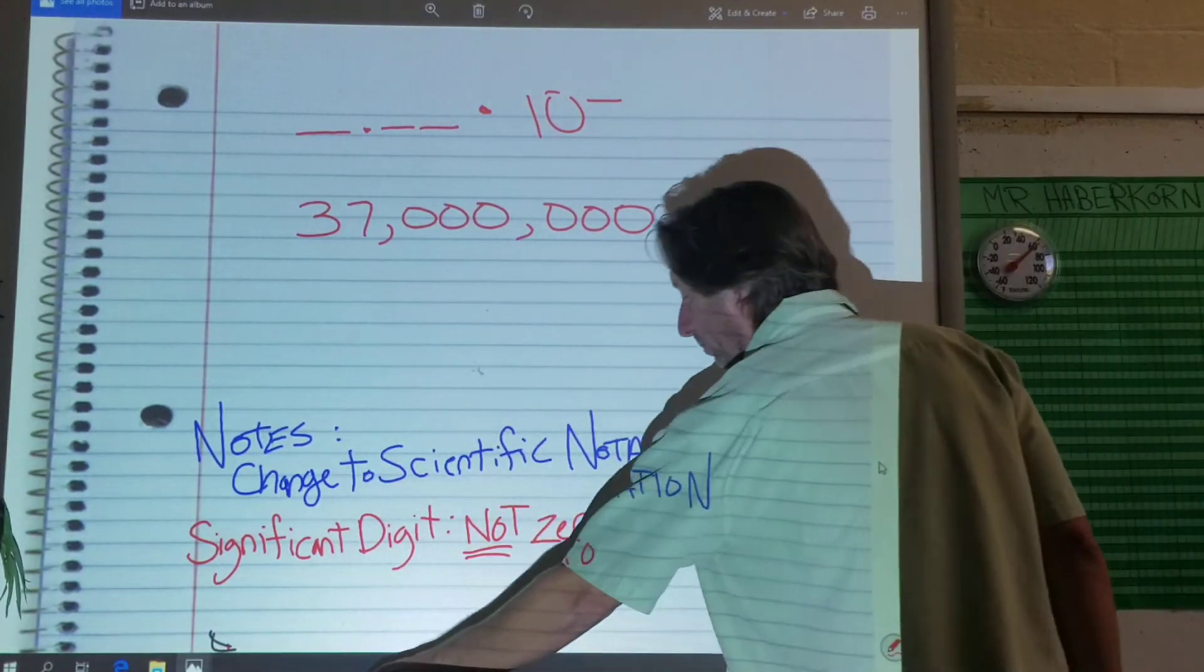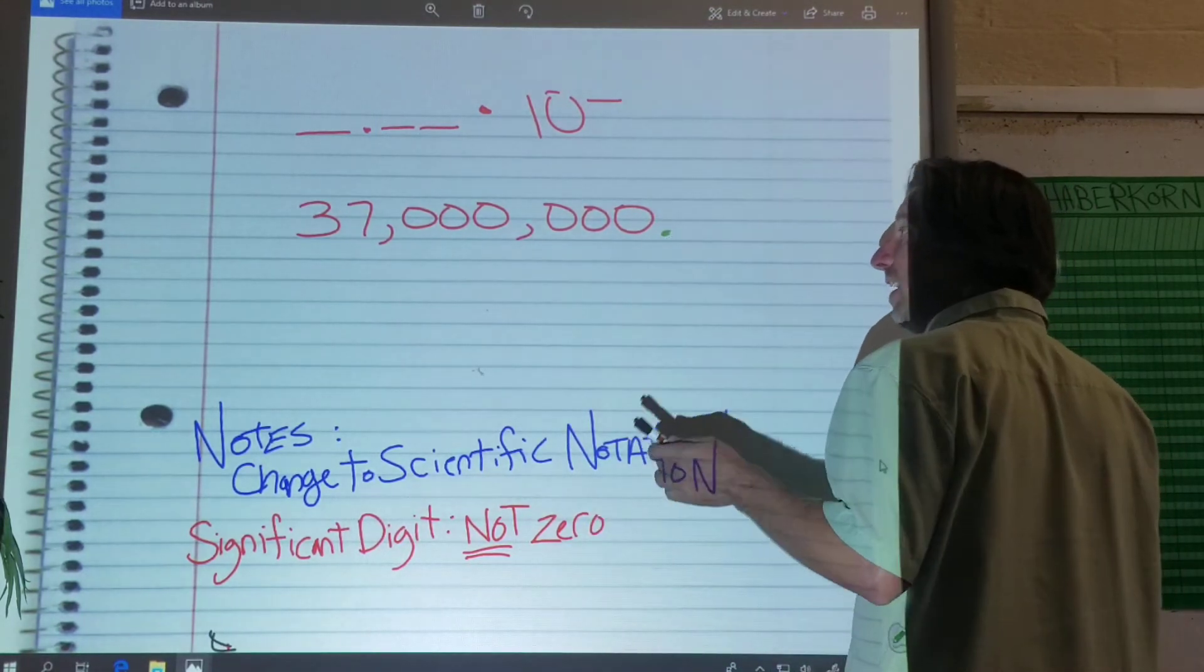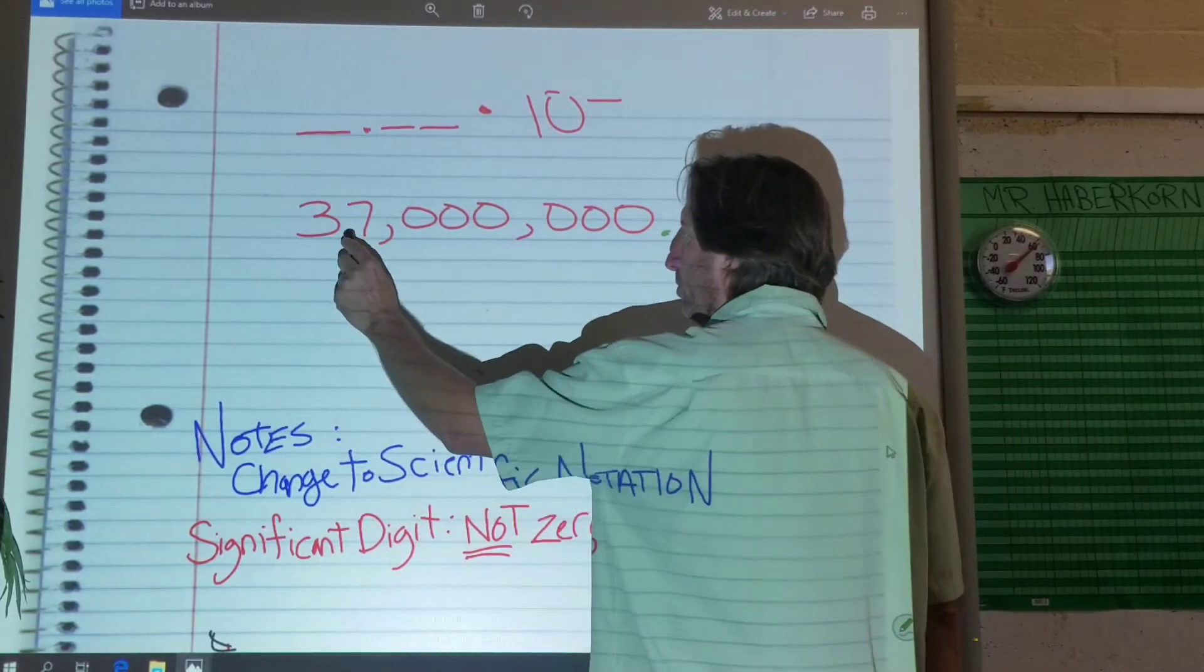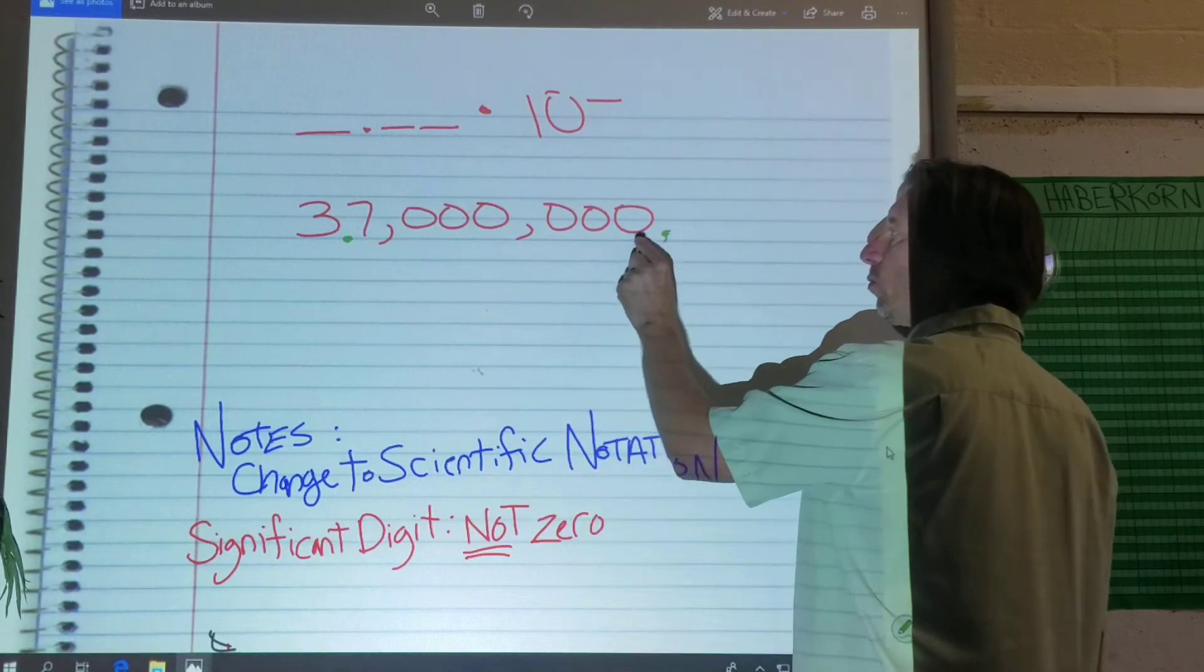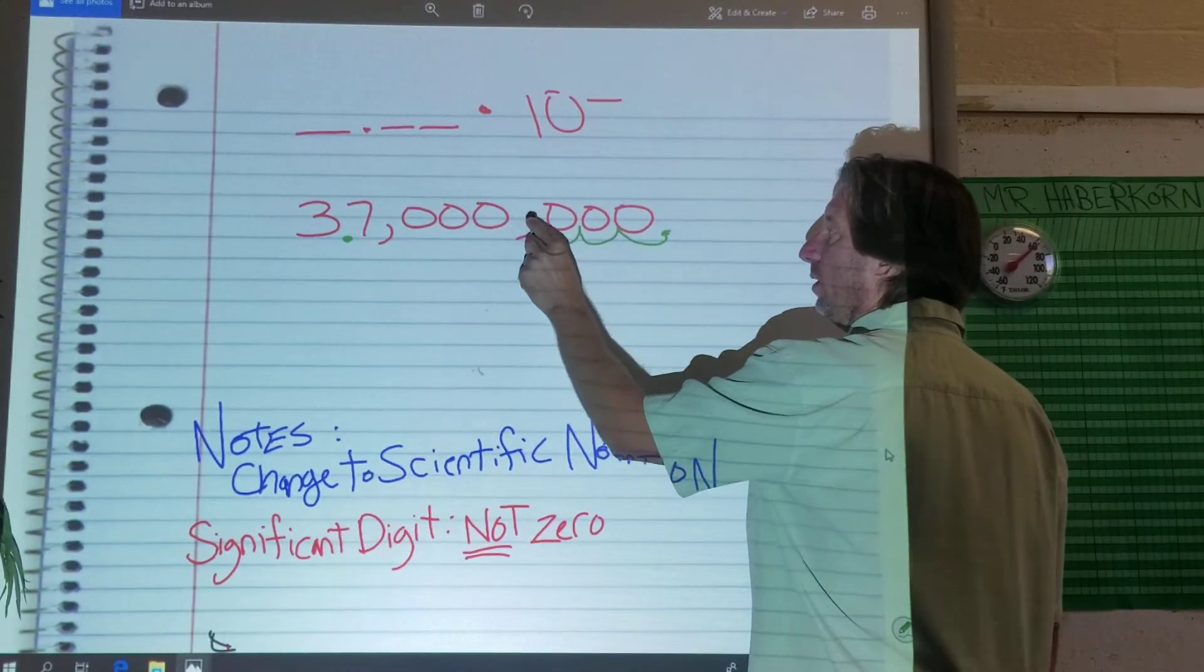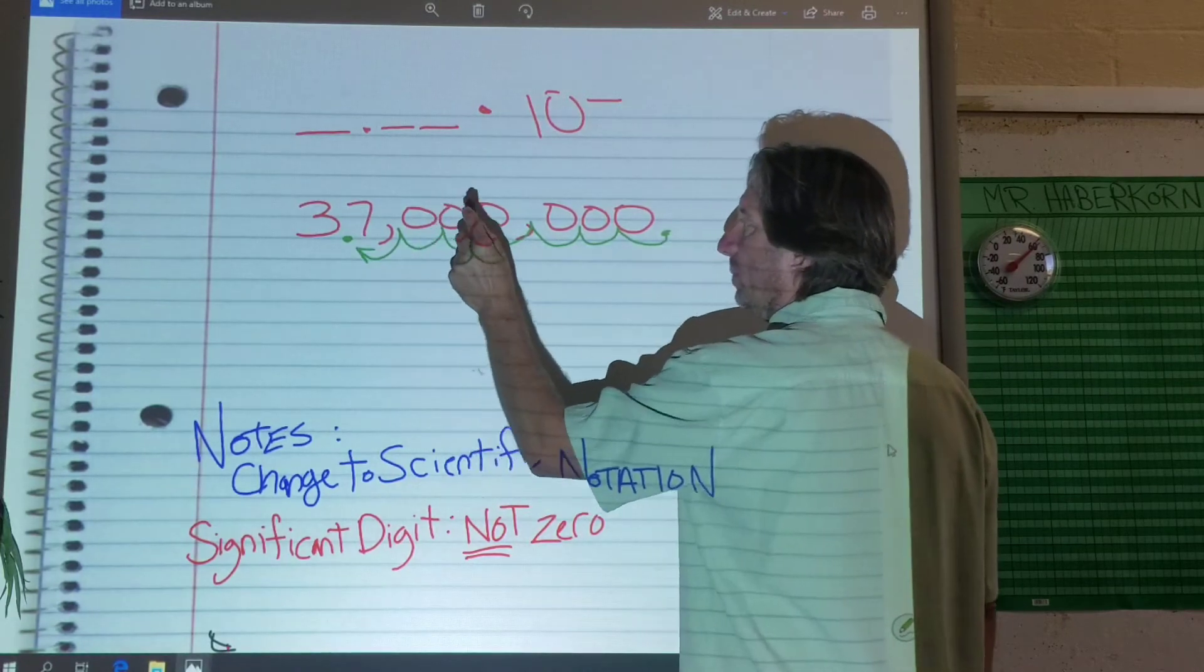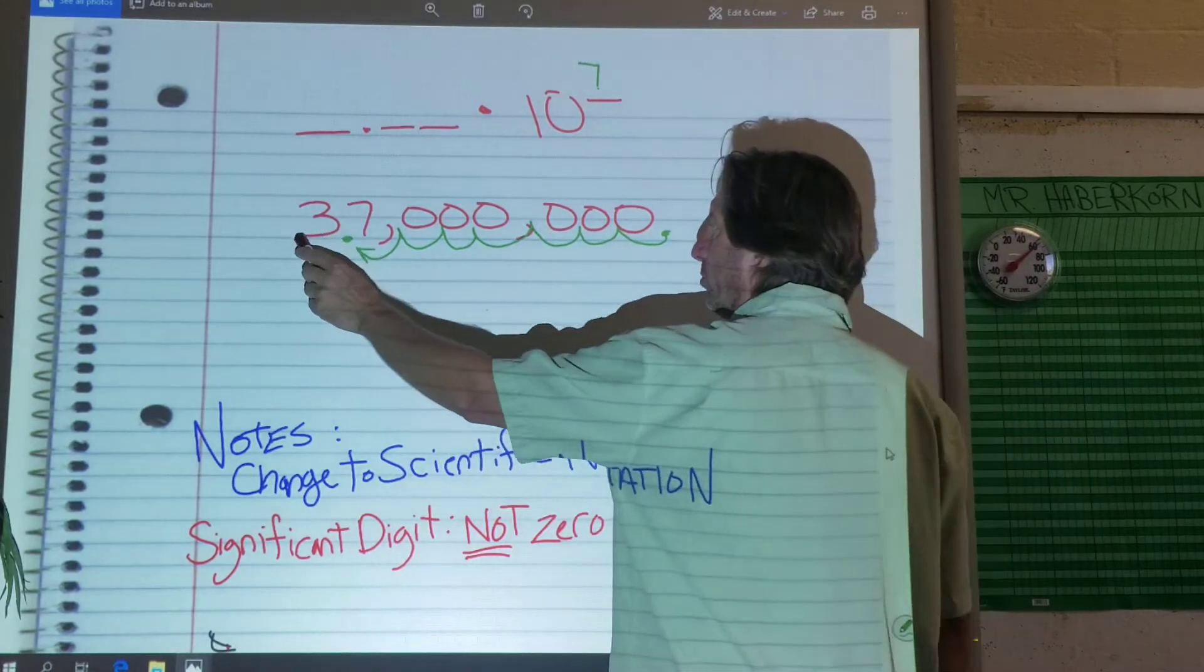So where's our point right now? It's hiding here at the end. We want to move it after the first significant digit, after the first number that's not zero. So we want it to be here. So how far are we going to move it? One, two, three, four, five, six, seven spaces. There's our exponent, right? Then I have 3.70.